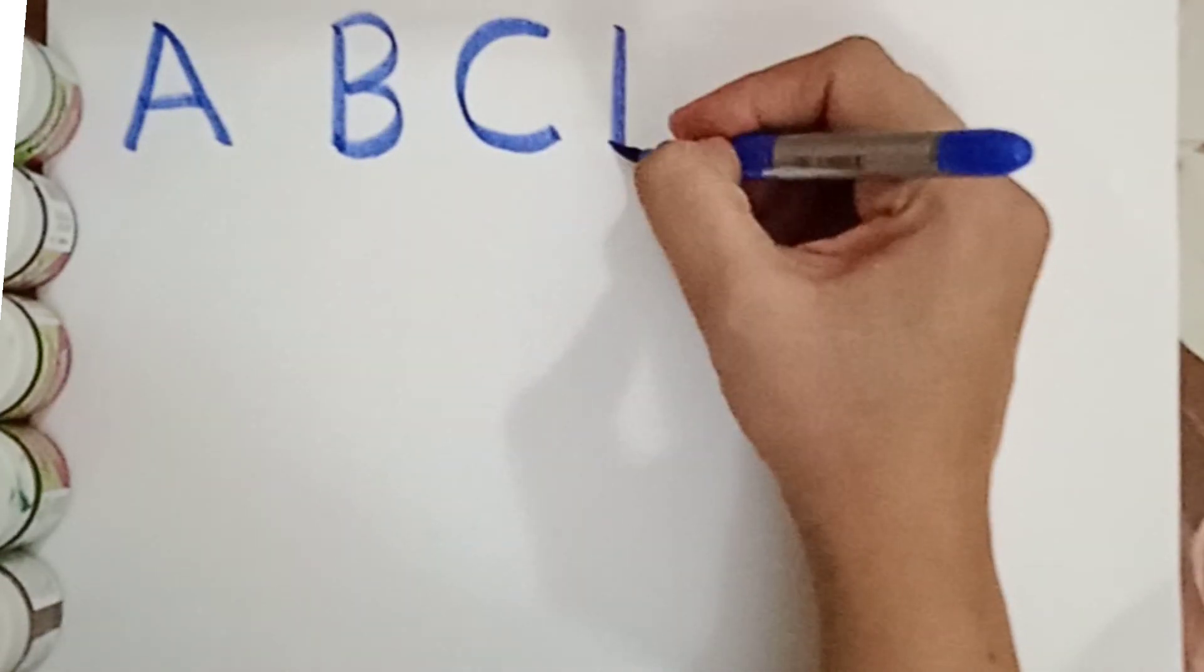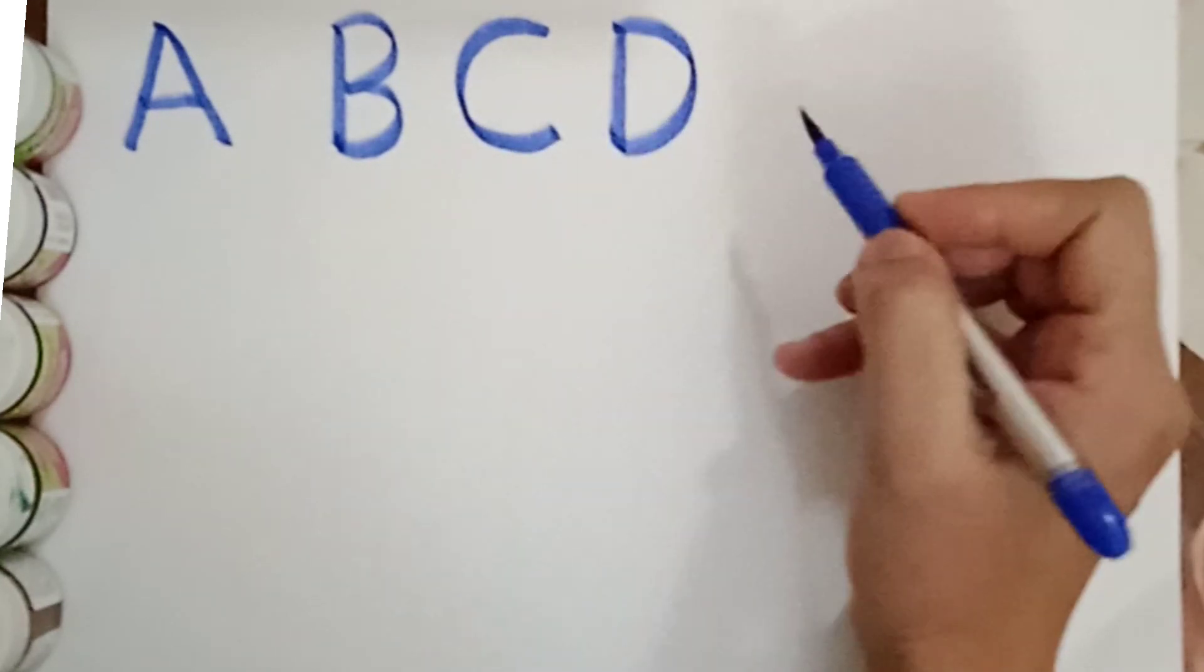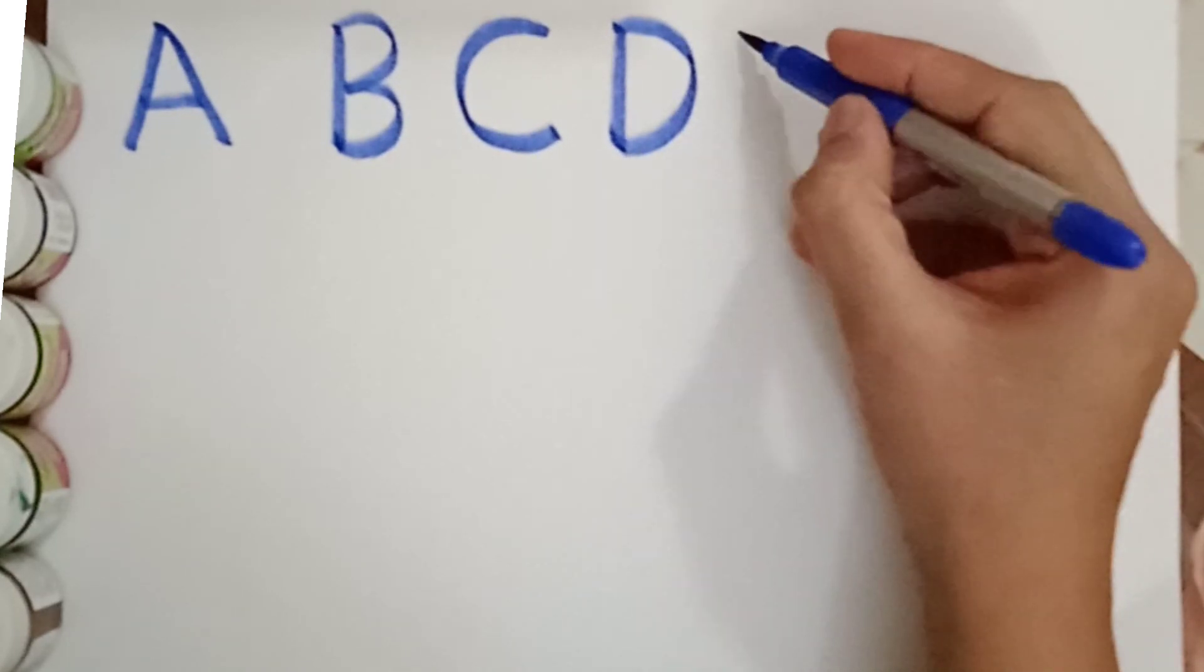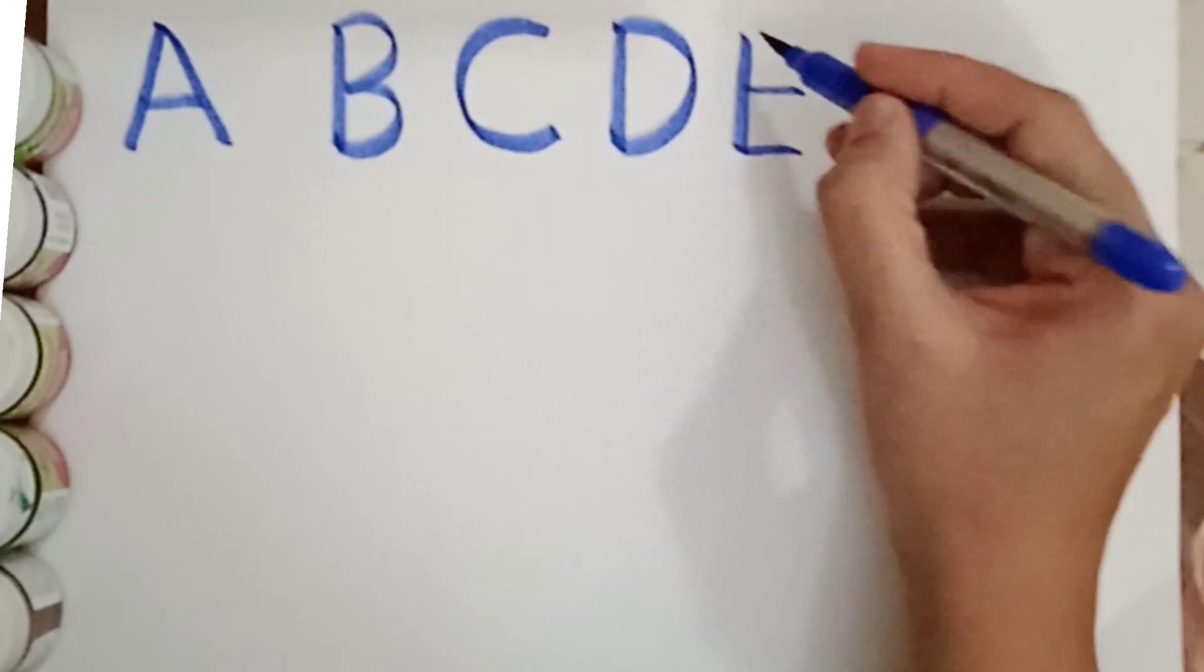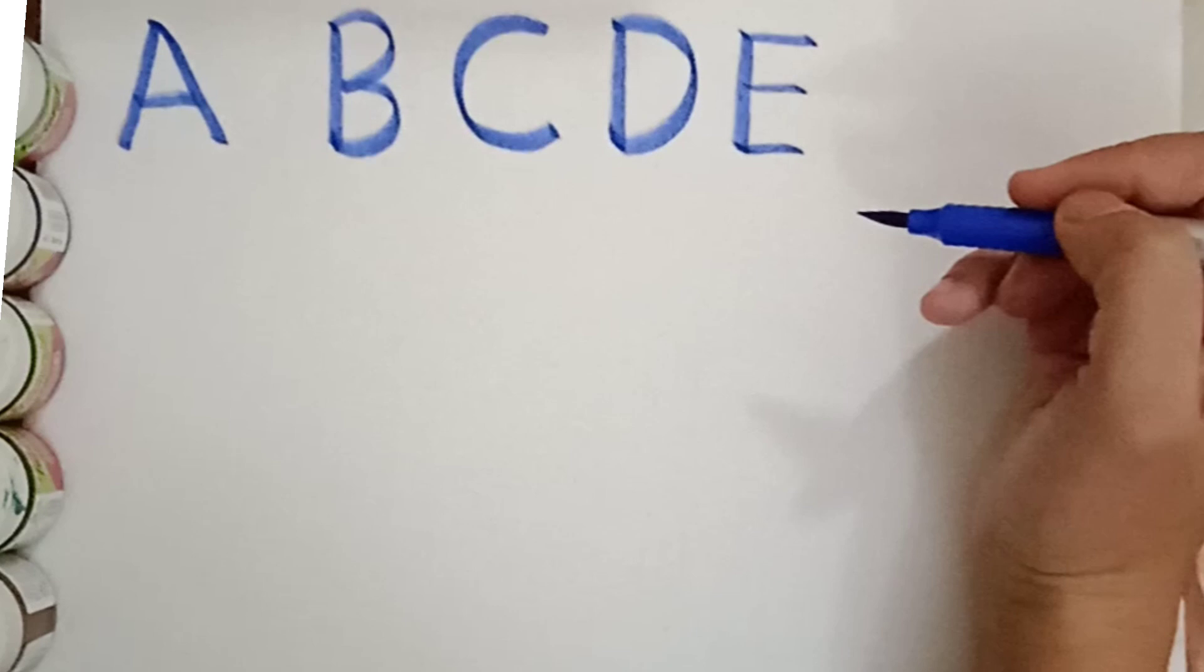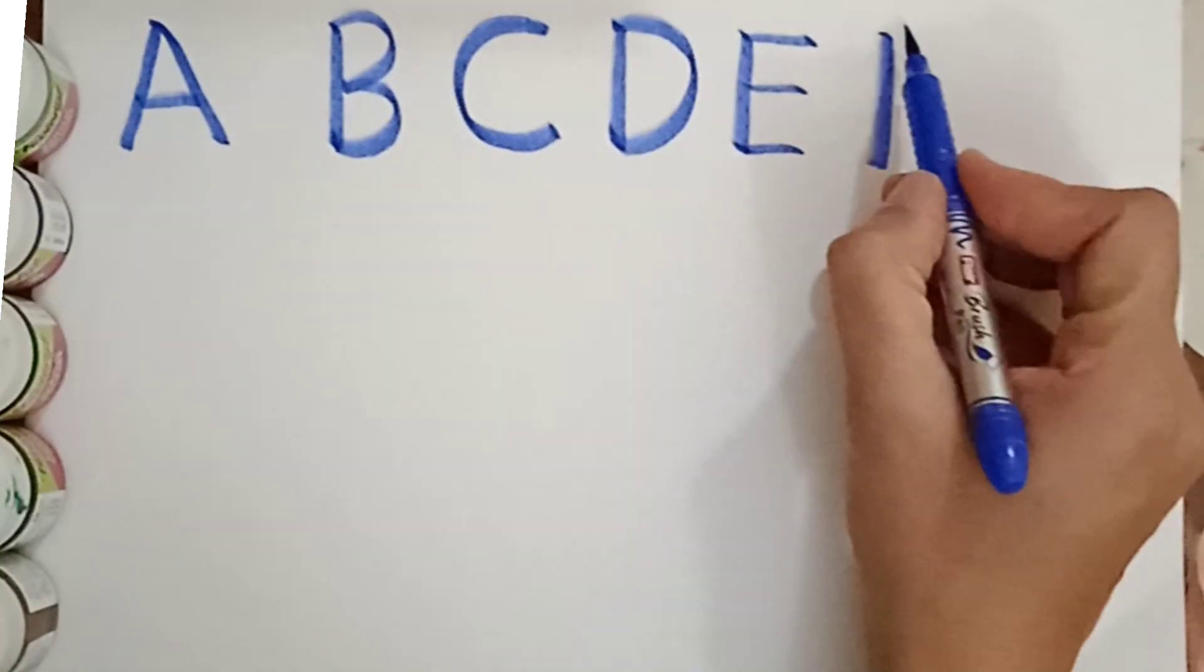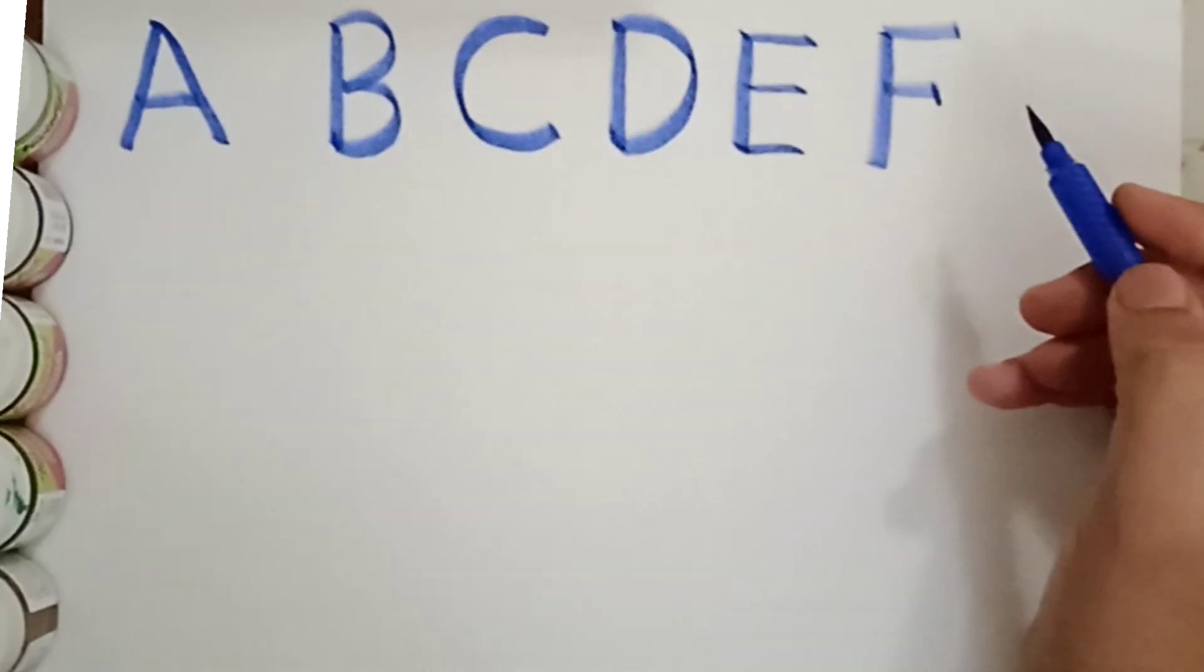Next letter is D. D for dog. D for dog. And what comes after D? E for elephant. E for elephant. Next letter is F. F for frog. F for frog.